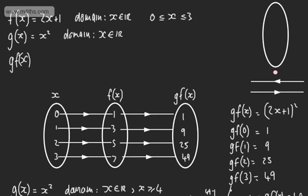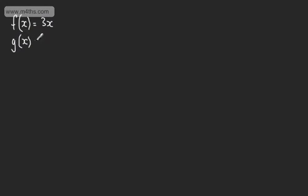Going the other way to define f of g of x: f's domain (the outside function) is 0 to 3, so we'd need to restrict the range of g (the inside function) to fit. We'd consider ±√3 to fit within the domain of f. Now let's look at some basic work. Let's take three functions: f(x) = 3x, g(x) = cos x, h(x) = x³.